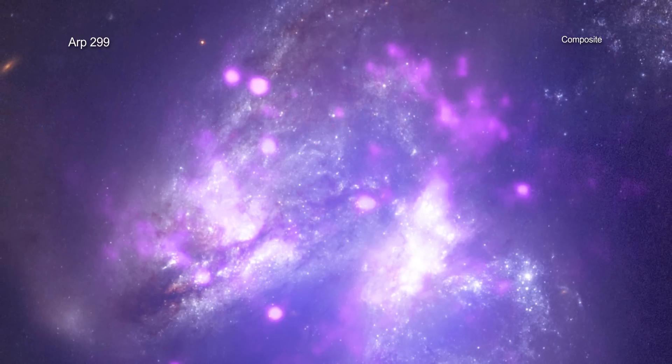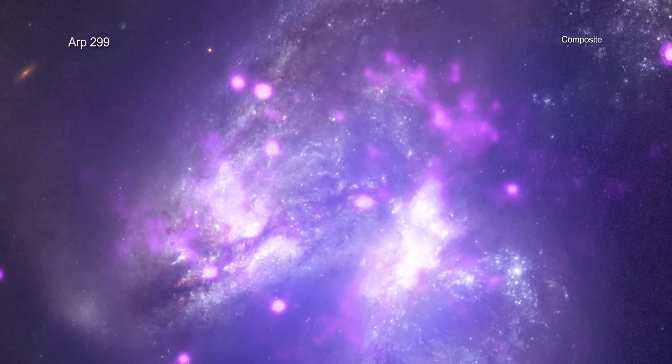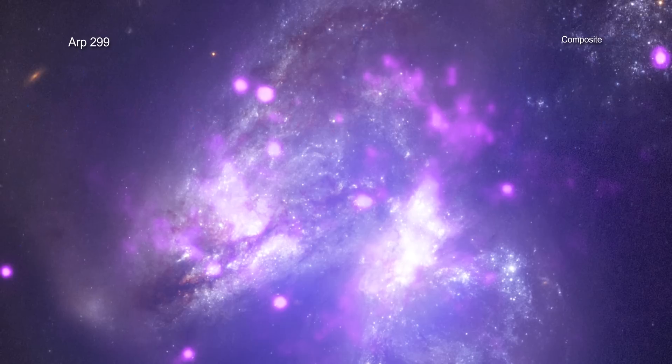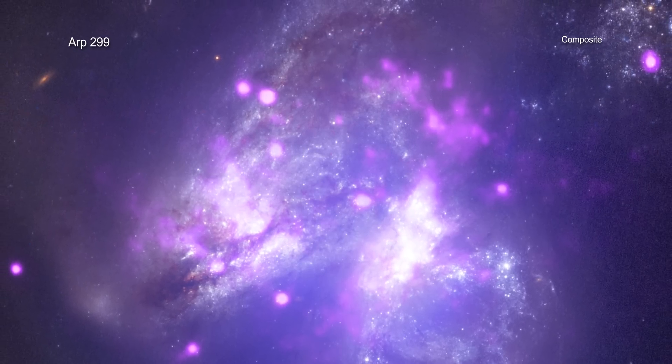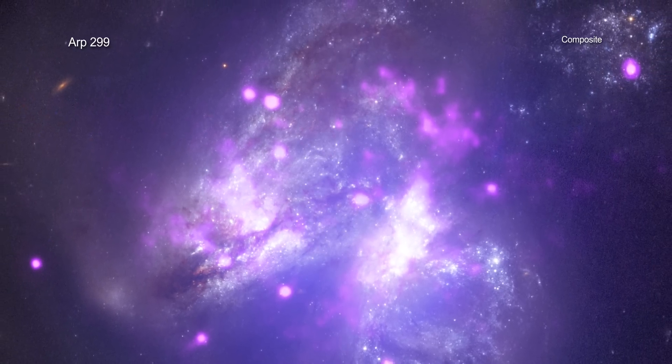The formation of high-mass X-ray binaries is a natural consequence of the blossoming star birth in ARP 299, as some of the young massive stars, which often form in pairs, evolve into these systems.